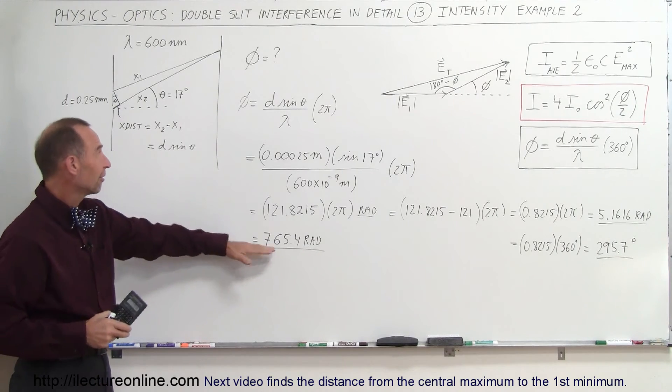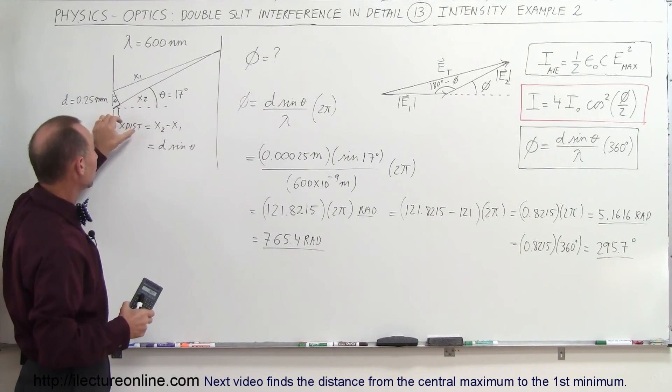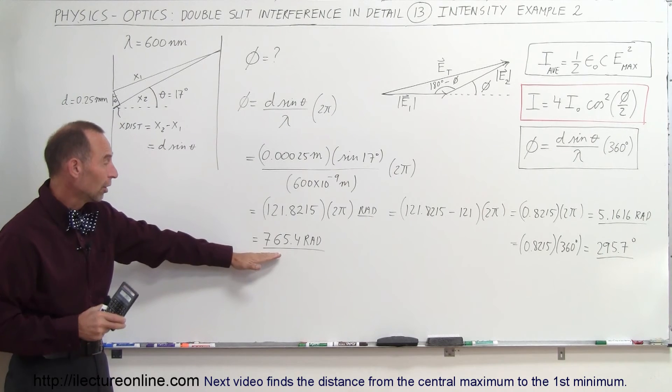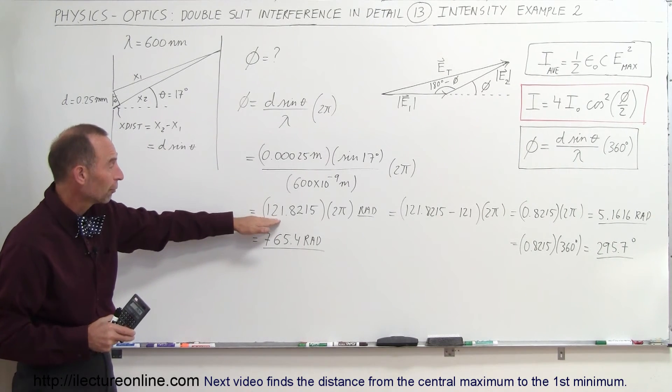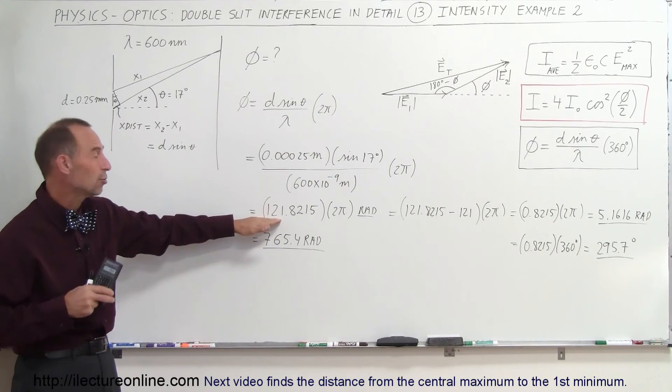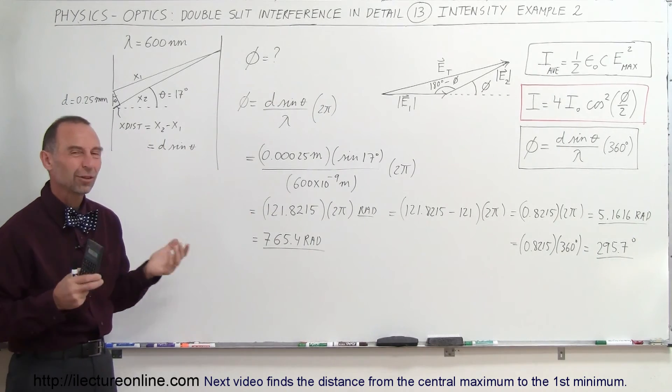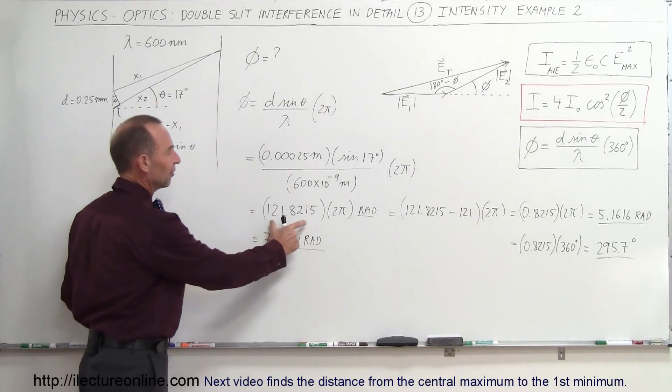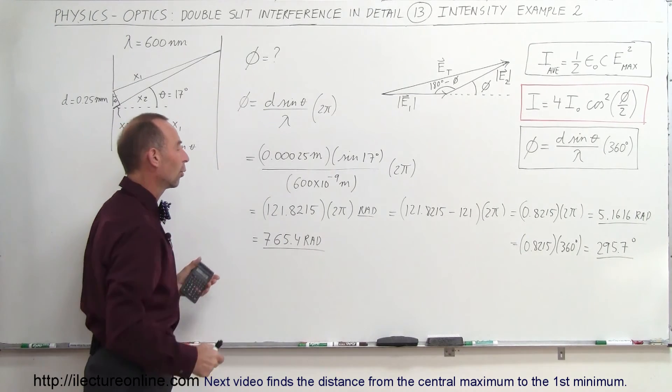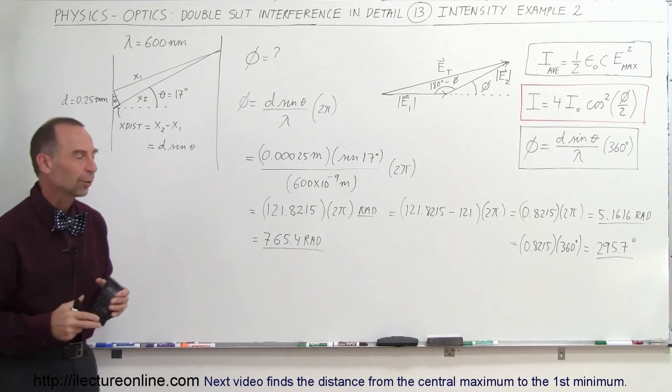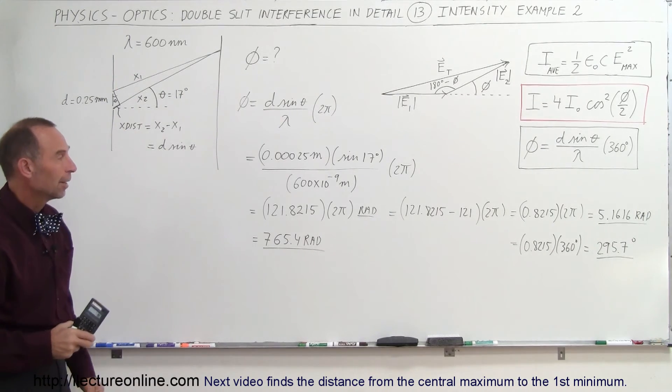Now, true enough that the phase difference between the one ray and the other ray, the extra path difference, does indeed equal 765.4 radians, or a total of a little over 120, almost 122 wavelengths. So that's another way of looking at it, that the difference in the path length is equal to almost 121 or 122 times the length of one wave at 600 nanometers.